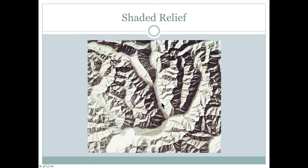Similarly, for this valley here we can see that this side of the valley wall is light because light is hitting it from the easterly direction, and this side is shaded or in the shadows because the light is not hitting it directly.